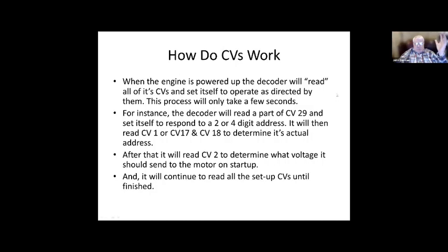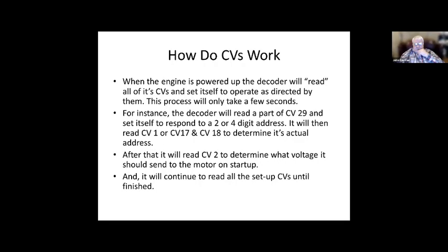When the engine is powered up, the decoder will read all of the CVs and set itself to operate according to them. This process only takes a few seconds. For instance, the decoder will first read CV 29 and determine whether you have a two or four digit address. It will then read CV 1 or CVs 17 and 18, depending on how many digits your address is, to determine the actual address. Once it's got the address, it will then read CVs 2, 3, 4, 5, etc., until all of the setup CVs are read.